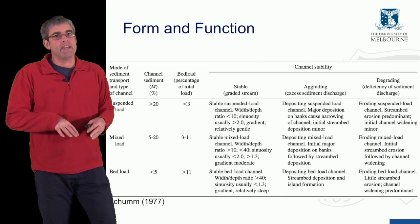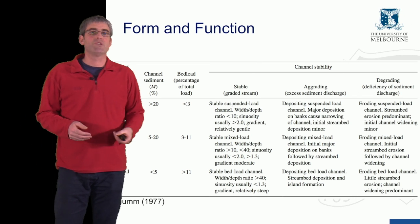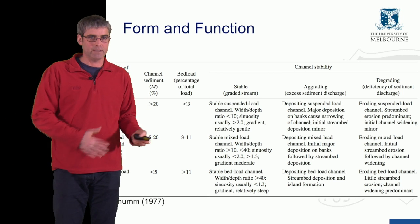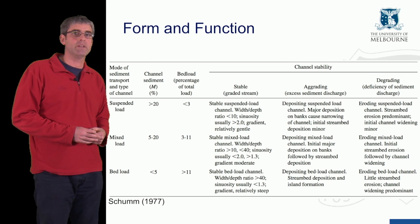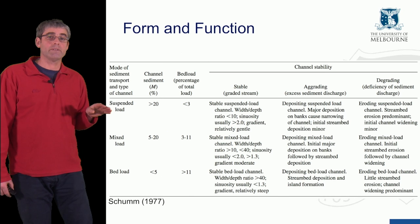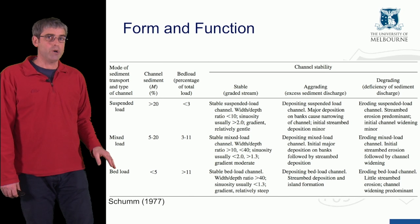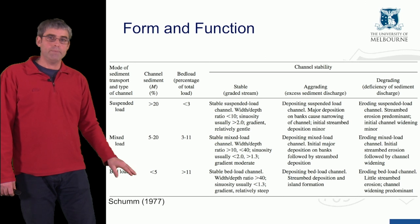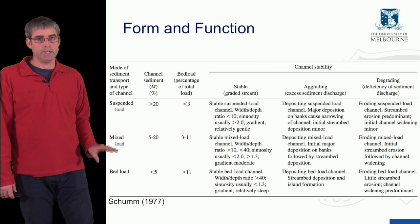There are a very large number of river classification methods based on either the form or the function of the river channel. A fairly simple one, also developed by Schumm in 1977, divides rivers into three types based on the mode of sediment transport: suspended load streams, bed load streams, or mixed load streams — some mixture of suspended and bed load. We'll focus on the suspended load and bed load cases to simplify.